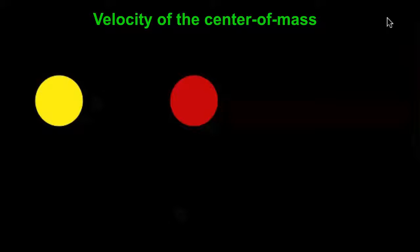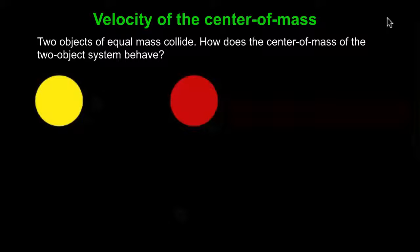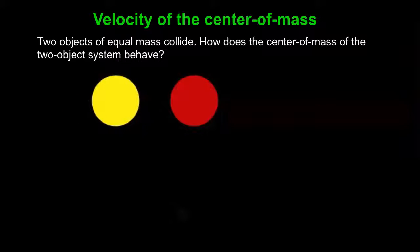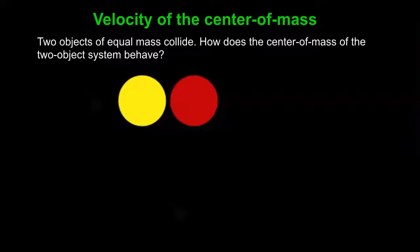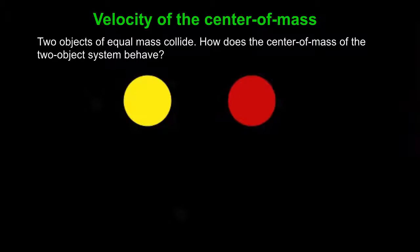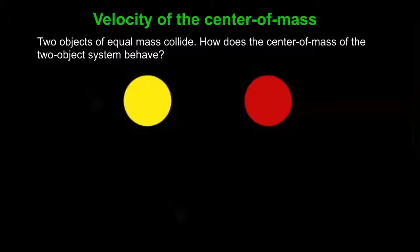Okay, so let's consider velocity of the center of mass. So we've got two objects that are going to collide, and we'll think about the center of mass of this two-object system. So the yellow, this might be two billiard balls, right? A yellow billiard ball collides with a red billiard ball, or a yellow air hockey puck collides with a red air hockey puck. What about the center of mass?